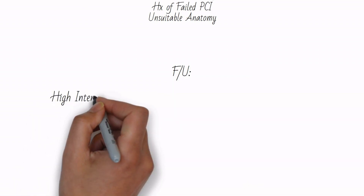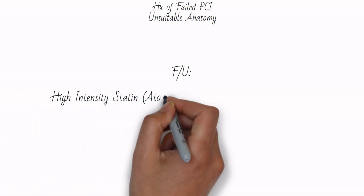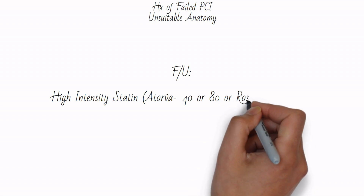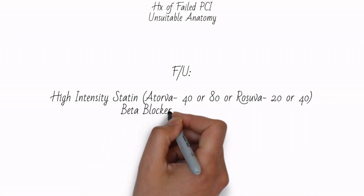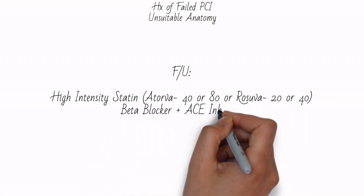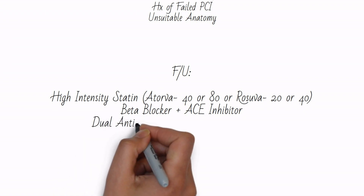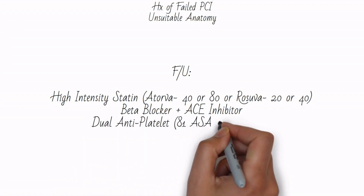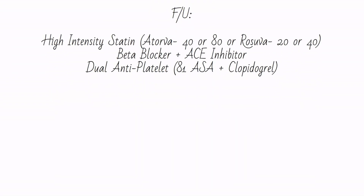Finally, long-term, the patient should be on a high-intensity statin regimen such as atorvastatin 40 or 80 mg or rosuvastatin 20 or 40 mg. They should be given a beta blocker and an ACE inhibitor, and dual antiplatelet therapy with aspirin at the 81 milligram dose and clopidogrel.